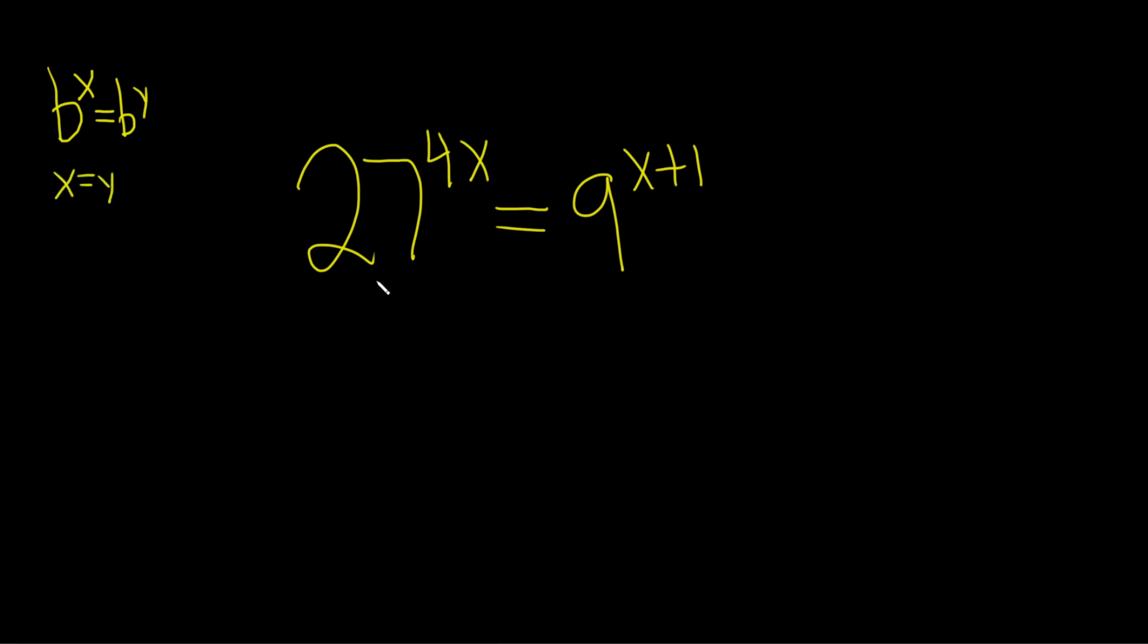On the left hand side, if you look at the 27, you can ask yourself how can I write that as something to a power. This can be written as 3 cubed in parenthesis, and then 4x. On the right hand side, we can write the 9 as 3 squared, and all of this is to the x plus 1.